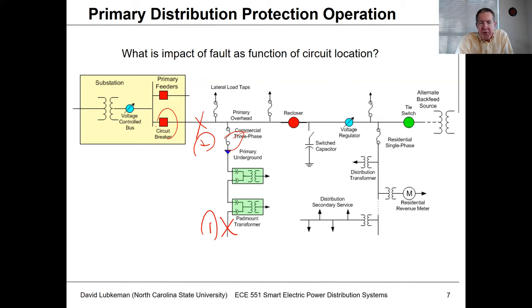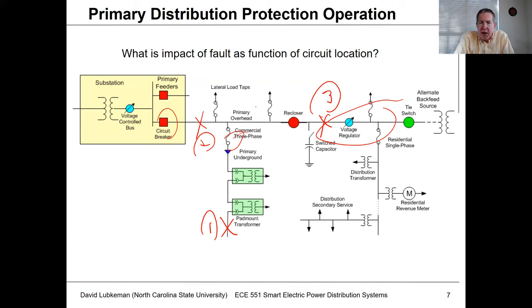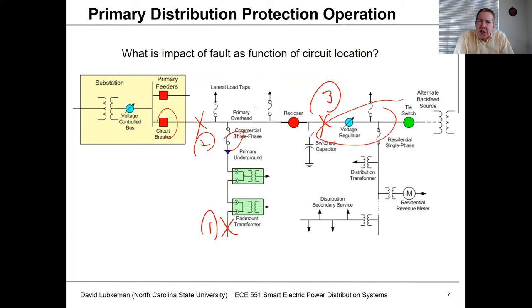If we had an event right here, what would happen is the recloser would operate hopefully before the circuit breaker. Then we would lose all these customers out here, but the customers upstream of the recloser would be okay. What you need to know for reliability analysis is all the different possible fault locations — sometimes referred to as contingency events — and how the protection is going to operate for each of those different fault locations, because that tells us what we expect to see given certain failure rates of components.